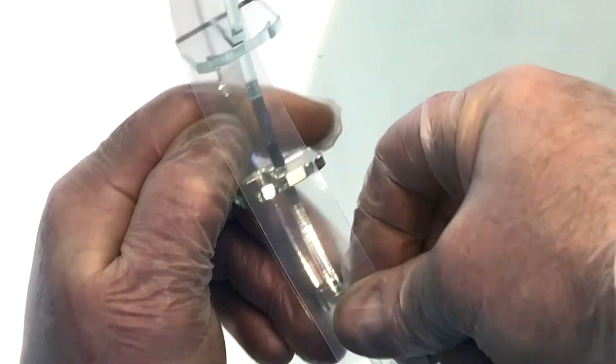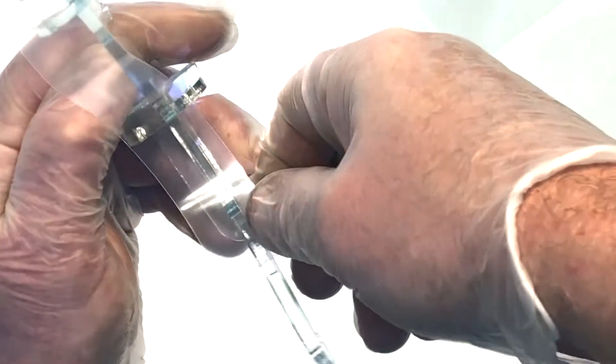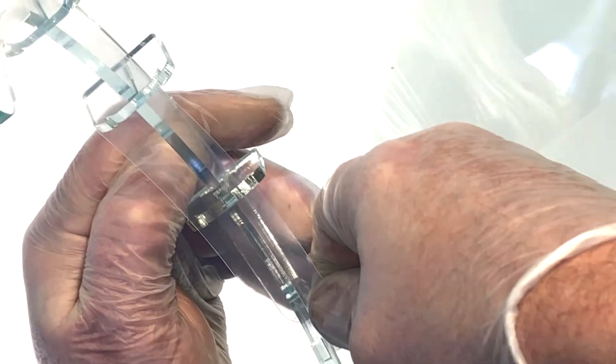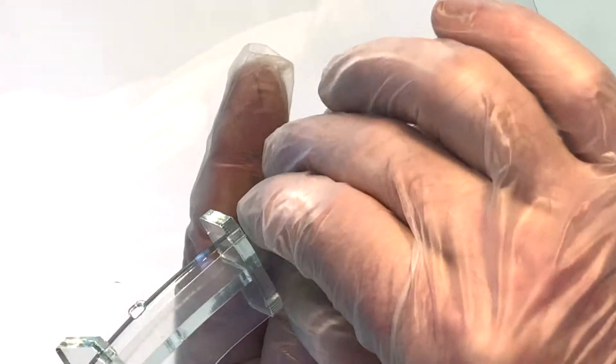Slide those two in there, and then each one of these has a tab with little slots that you slip the top and bottom of that strip into.